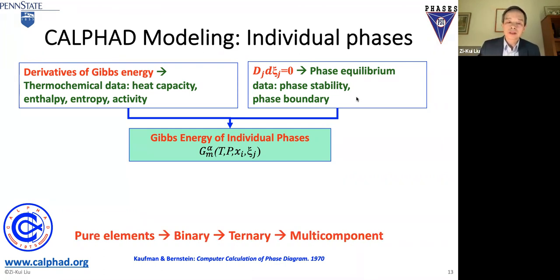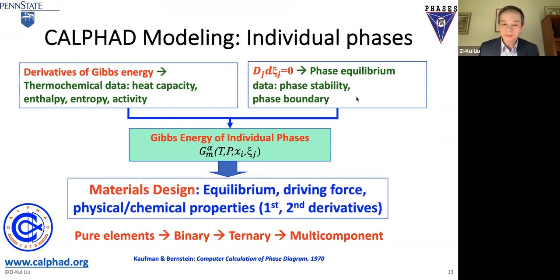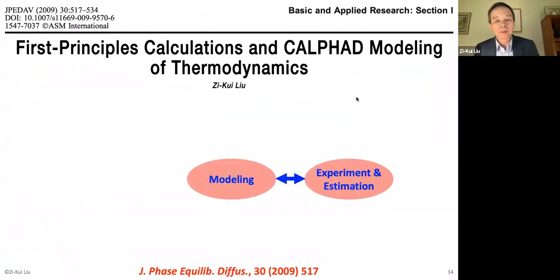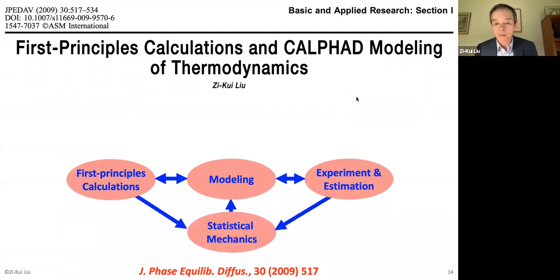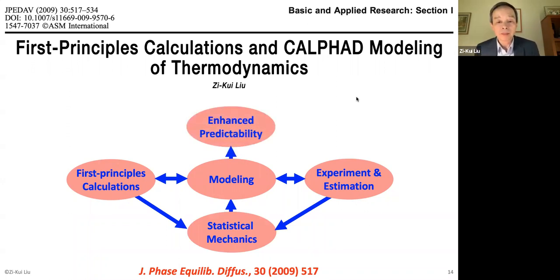You take both sets of data — they come from the same origin — to develop internally consistent free energy functions for all phases, starting with pure elements, then binary, ternary, and multi-component systems. Once you have those Gibbs energy functions, you can do material design, calculate equilibrium and driving forces, and calculate properties from the first and second derivatives. About 20 years ago, first-principles calculations became widely available, mostly for zero Kelvin. Using statistical mechanics and phonon calculations, you can get finite-temperature property data, making the CALPHAD database much more robust and predictive.